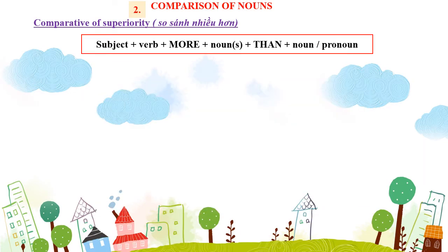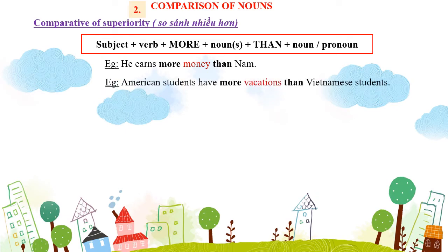Công thức so sánh nhiều hơn: S + verb + more + noun + than + noun/pronoun. Ví dụ: "He earns more money than her." – Anh ta kiếm nhiều tiền hơn cô ấy. Ở đây chúng ta thấy sau "more" là uncountable noun: money. Ví dụ thứ 2: "American students have more vacations than Vietnamese students." – Học sinh Mỹ có nhiều kỳ nghỉ hơn học sinh Việt. Ở đây "vacations" đứng sau "more" là countable noun – danh từ đếm được.